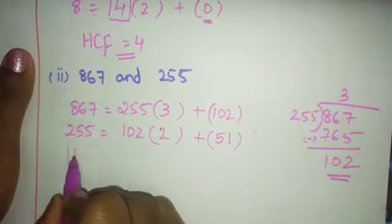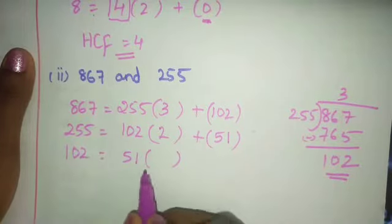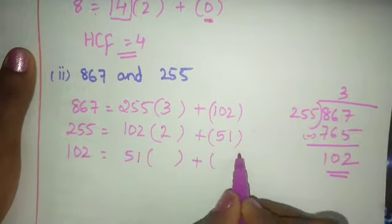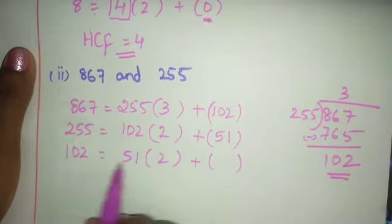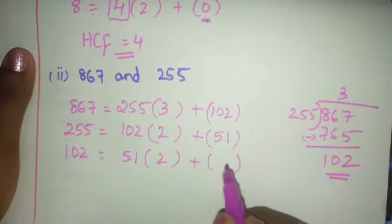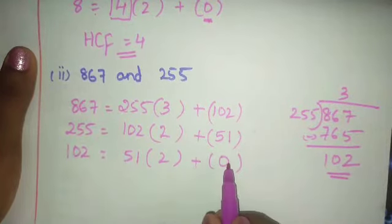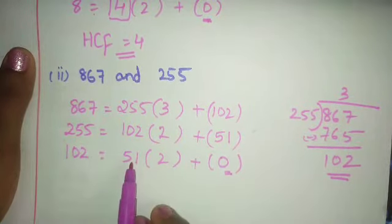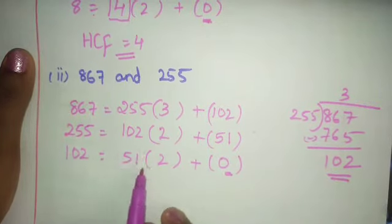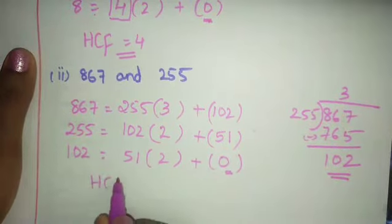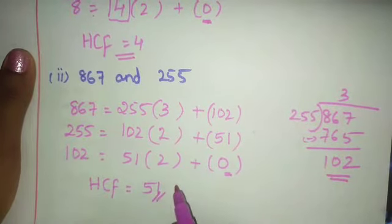Now take 102 = 51 × 2 + 0. 51 × 2 is 102, so the remainder is 0. When remainder is 0, stop. The number next to the equal sign is your HCF. So HCF is 51.